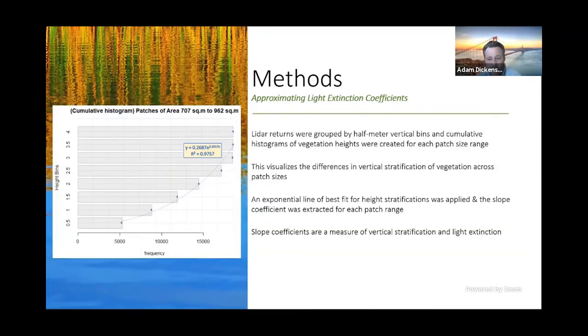And one of the things that I'm trying to approximate is light extinction, or in other words, how quickly light is lost as you move down the vertical vegetation profile due to vegetation structure. So to do this, I grouped my data points by half meter vertical bins to represent the different vertical stratifications of the patches. And this basically is recreating the densities of vegetation at different vertical profiles. And this quantifies the vertical structure, which regulates light extinction. So once I had the densities of the vertical stratifications, I fit an exponential curve to the data and I extracted the slope coefficient. This is from the Beer-Lambert law. It's a mathematical model, but it's a measure of light extinction.